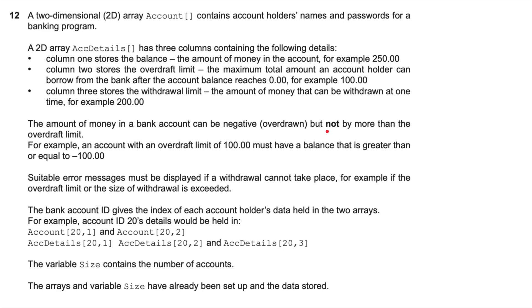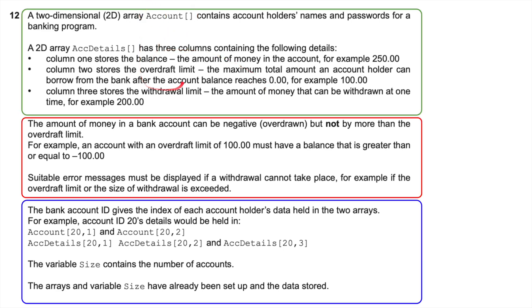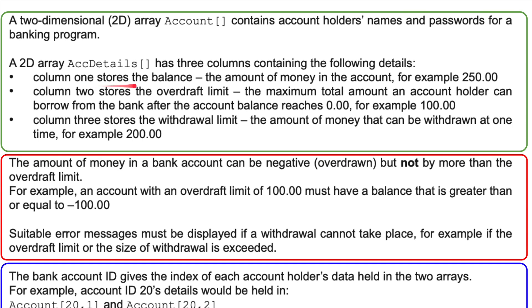Here's the problem. A two-dimensional 2D array called Account contains account holders' names and passwords for a banking program. Another 2D array, Account Details, has three columns: column 1 stores the balance (e.g. 250), column 2 stores the overdraft limit — the maximum total amount the account holder can borrow after the balance reaches zero (e.g. 100) — and column 3 stores the withdrawal limit, the amount that can be withdrawn at one time (e.g. 200).